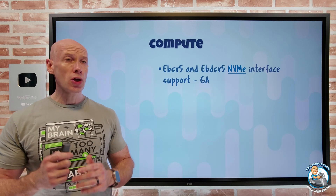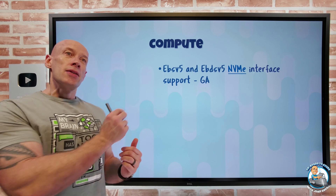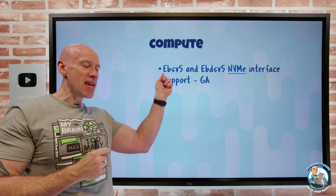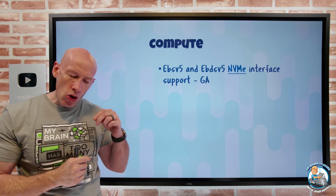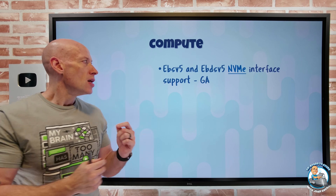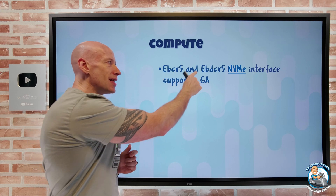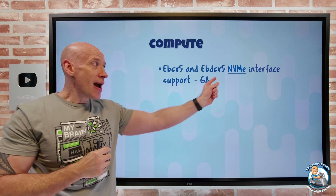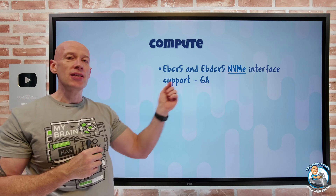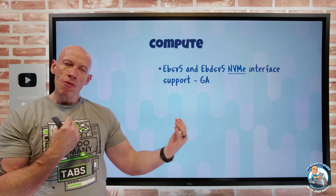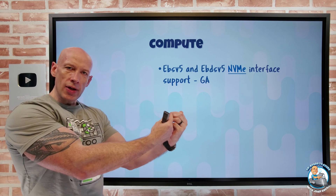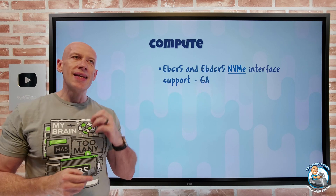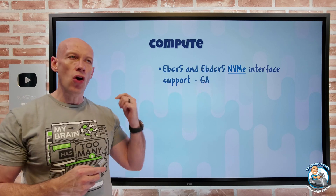On to what's new. On the compute side, the memory-centric V5 — the EB series, where the B is focused around block storage performance — so for the EBSv5 and the EBDSv5 (where D means it has local temporary storage as well), there is now an NVMe interface option. Ordinarily the remote storage connectivity is SCSI protocol, so now there is the option of using an NVMe interface on these.